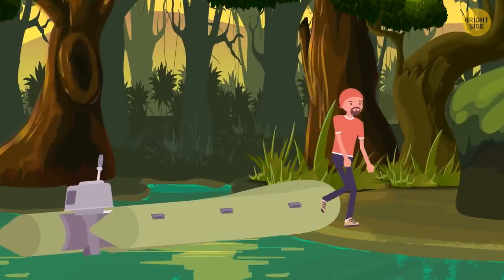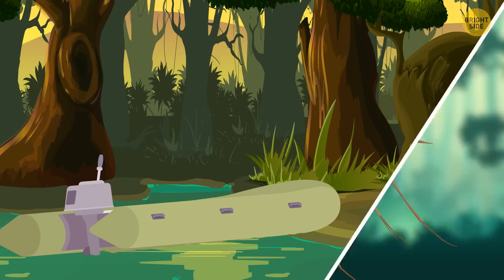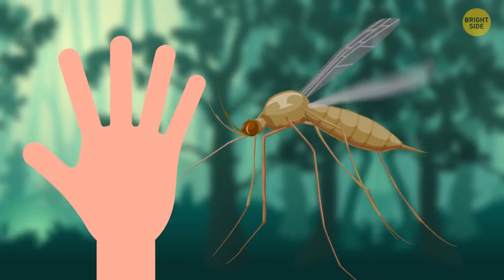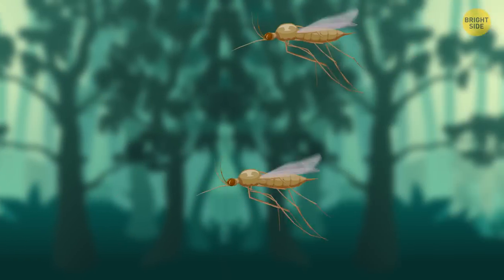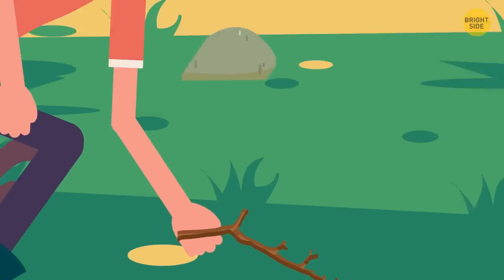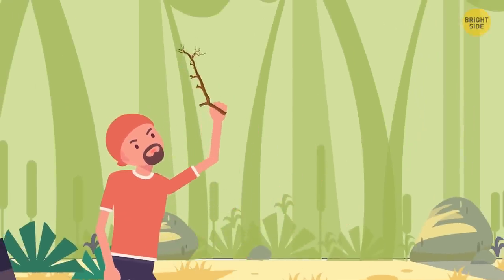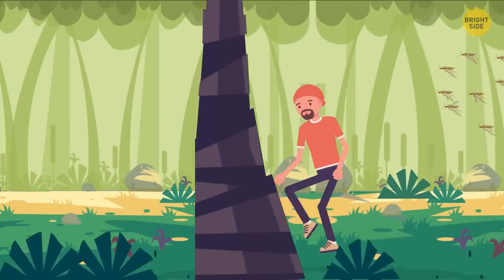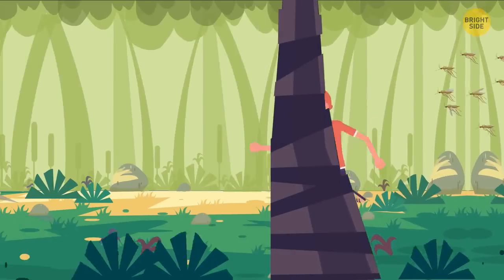Eventually, you see a large cluster of mosquitoes the size of your hand buzzing around. They notice you and start flying toward you. You grab a branch and start swatting them away. You run back to your boat and try to escape, but they follow you, and some manage to land on you.